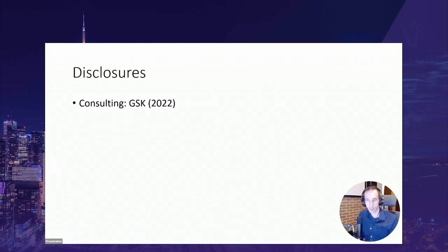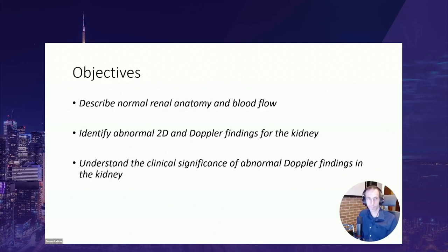The objective of this talk is to describe the normal anatomy of the kidney and its appearance on 2D ultrasound, describe the normal appearance of Doppler renal ultrasound, and then to identify abnormal findings and their significance in a perioperative setting.